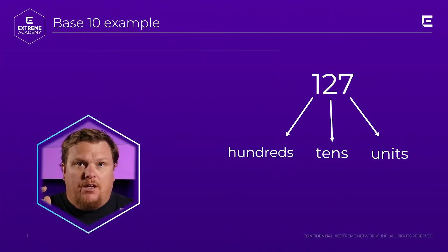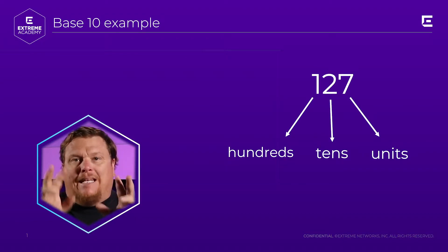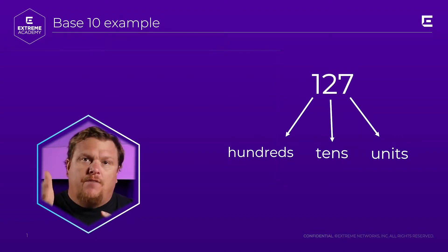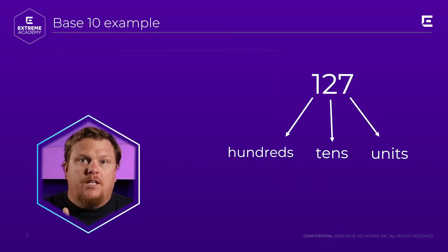You remember we learned way back in school the ones place, the tens place. In the number 127, the seven is in the ones place, the two is in the tens place, and the one is in the hundreds place. Notice that when you go from the ones, the tens, the hundreds, the thousands, the ten thousands place, every time you do that you're multiplying by 10 — base 10. That's why that's done.